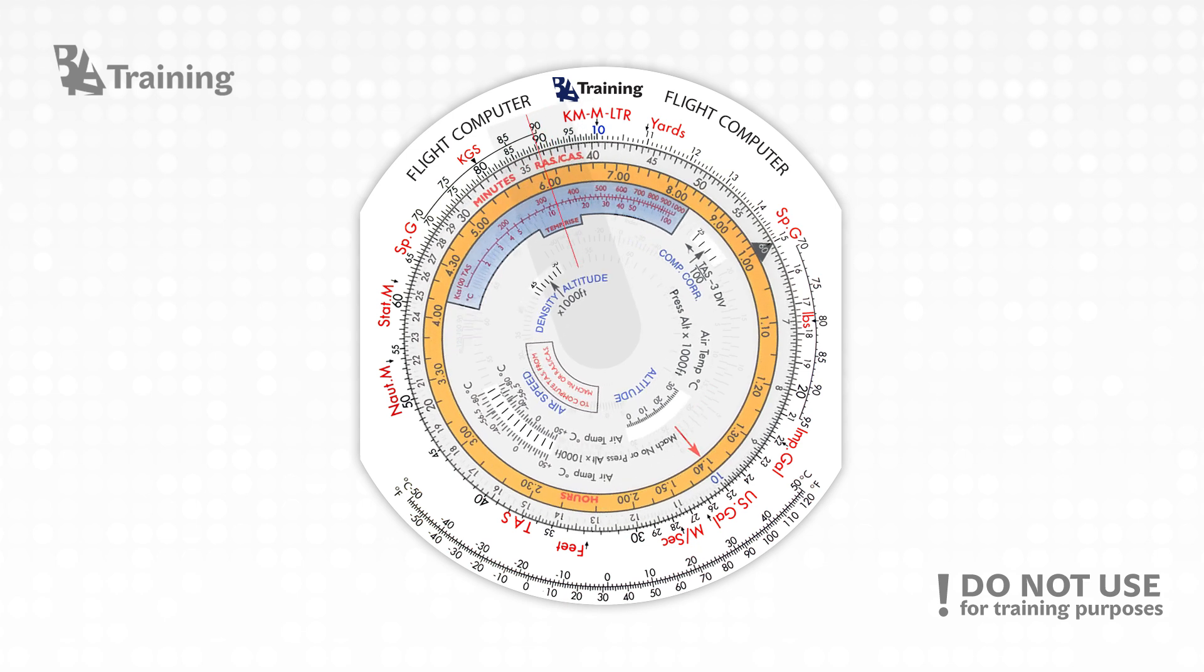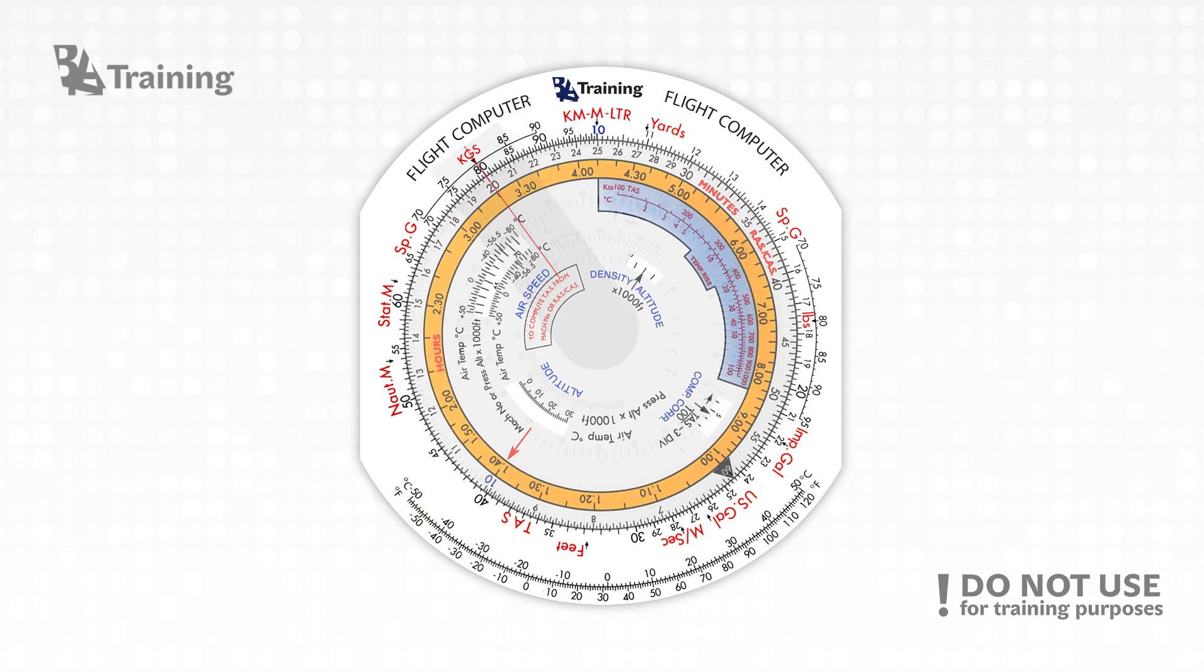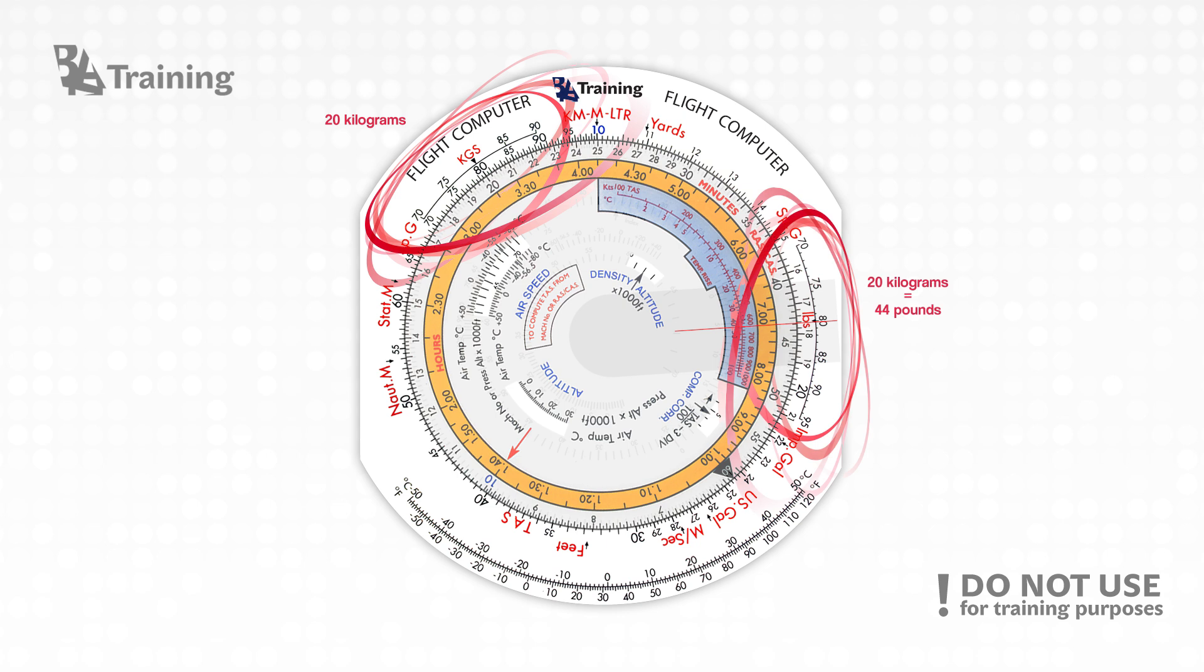Rotate the inner scale to your desired conversion amount until the weight numbers match the kilogram arrow. Then turn the cursor to the pounds arrow, which will give you the weight in pounds.